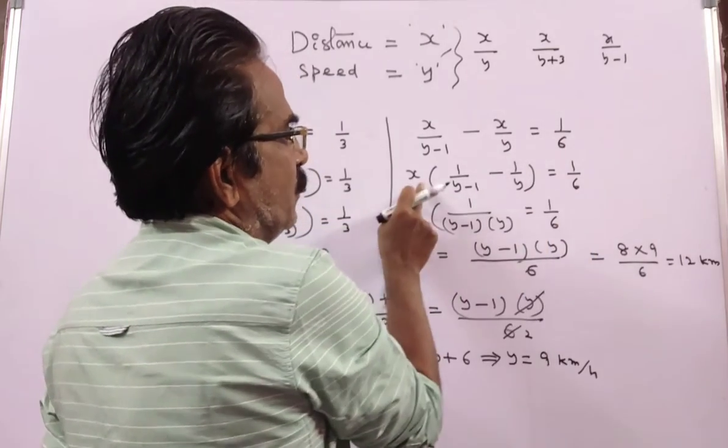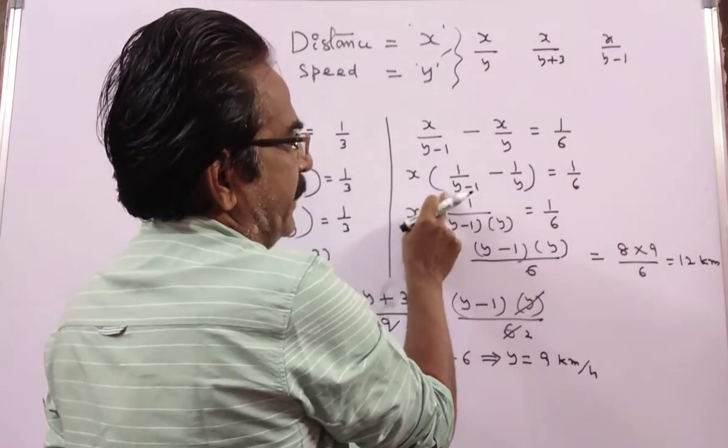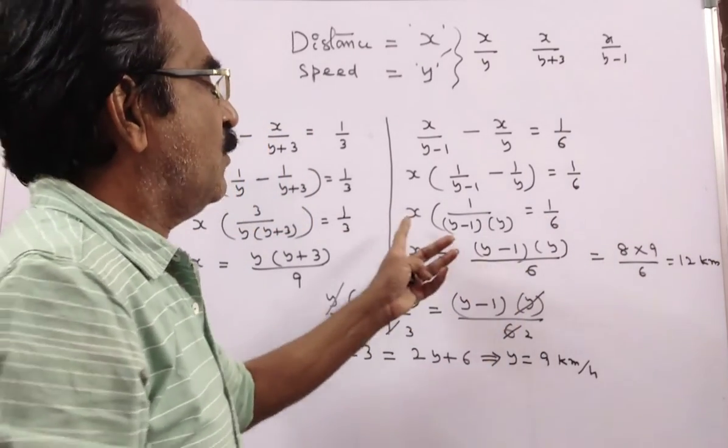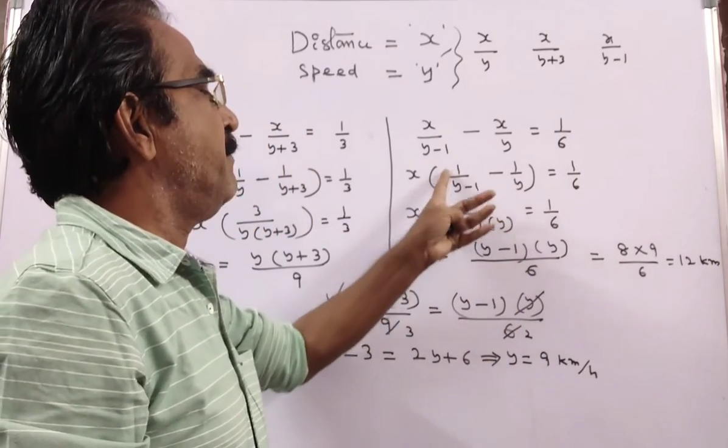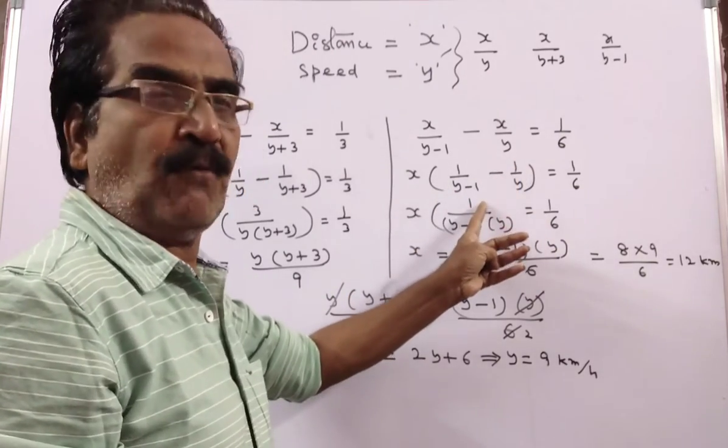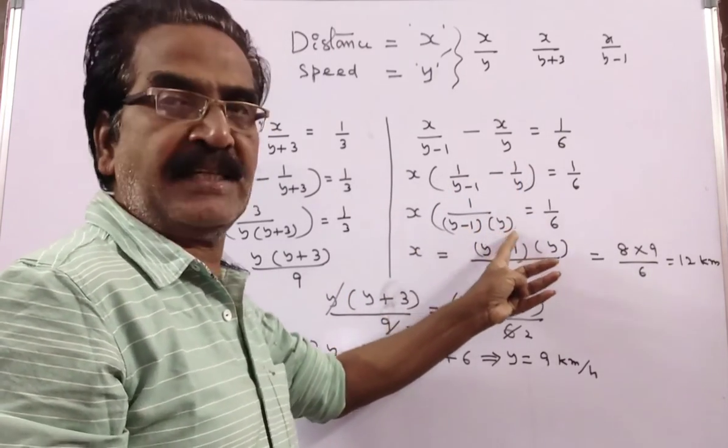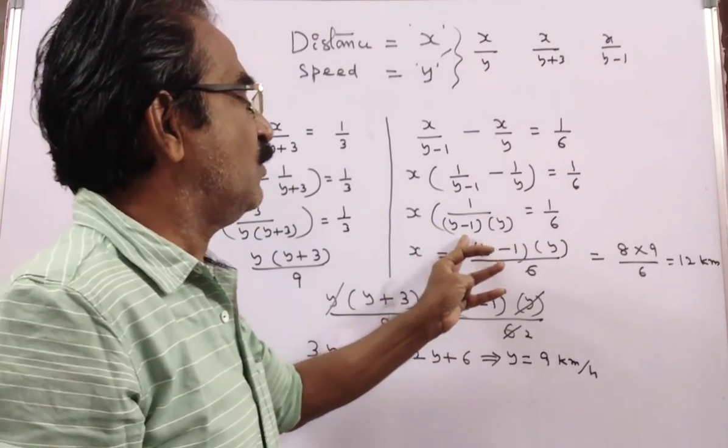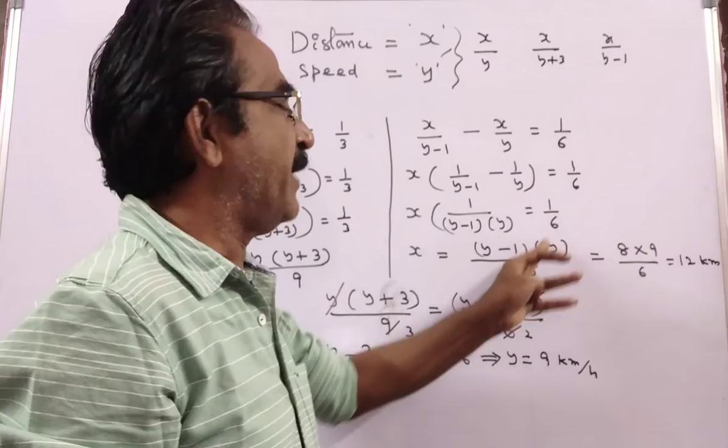So x into (1 by (y minus 1) minus 1 by y) equals 1 by 6. x into ((y minus (y minus 1)) by ((y minus 1) into y)) equals 1 by 6. x into (1 by ((y minus 1) into y)) equals 1 by 6. This implies x equals (y minus 1) into y by 6.